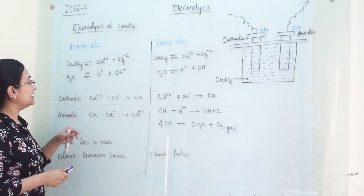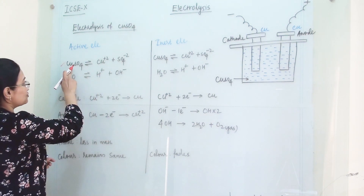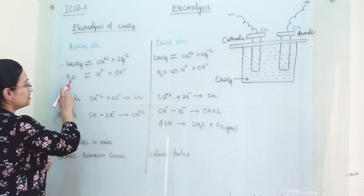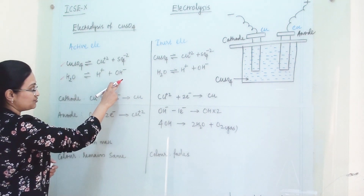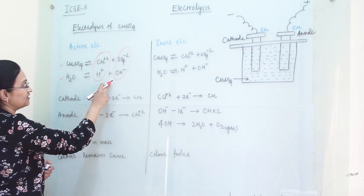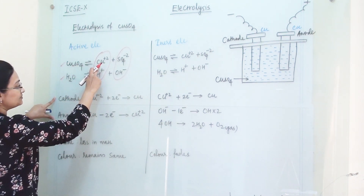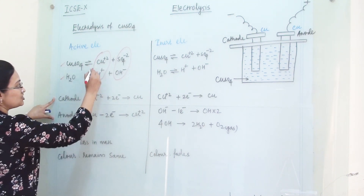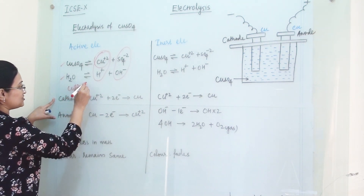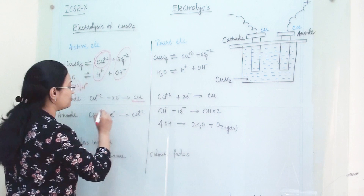When we use an active electrode, there will be two compounds which will dissociate. From CuSO4 we will get Cu²⁺ and SO4²⁻, and from water H2O we will get H⁺ and OH⁻. So we will get two positive ions and two negative ions. At cathode, we will get Cu²⁺ and H⁺, but Cu²⁺ will get preferential discharge. So we will get copper metal at cathode.